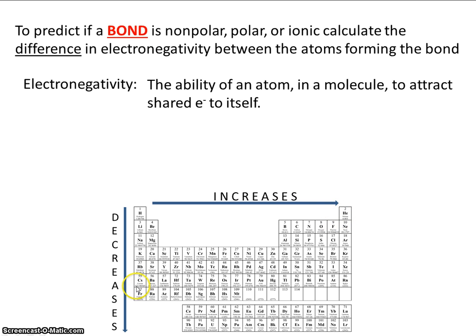Conversely, francium is the least electronegative element. It likes electrons the least. So francium has a tendency to get rid of or to lose electrons, and fluorine has a tendency to pull electrons towards itself, or to gain them.